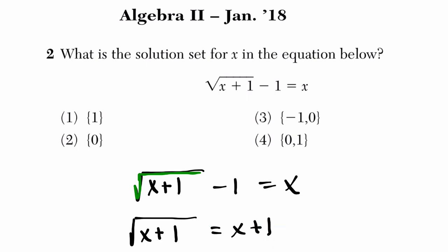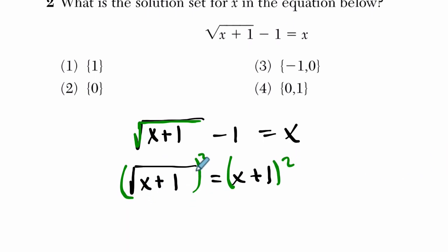OK, now when we square both sides, things are a bit easier to work with. On the left-hand side now, the square root and the square just cancel out, and what's left is x plus 1. On the right-hand side, we have x plus 1 times itself. So that's x squared plus 2x plus 1. And this is a little bit easier to work with.